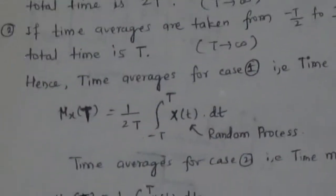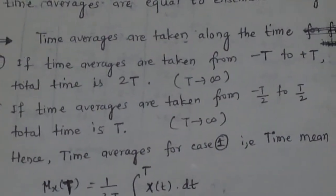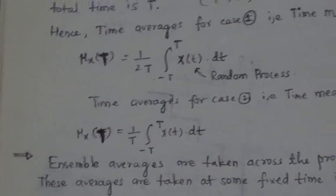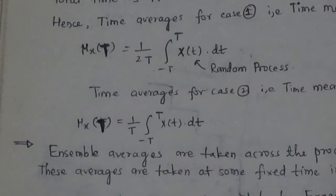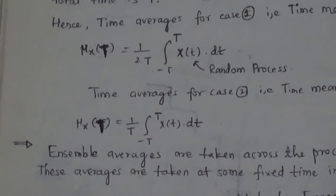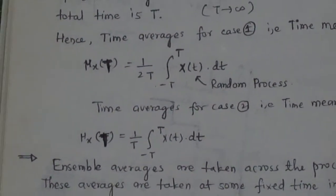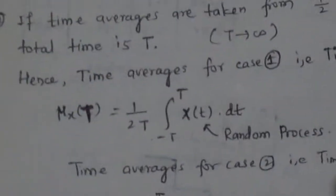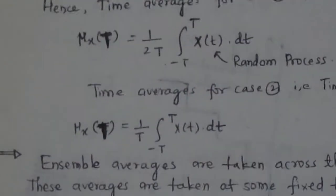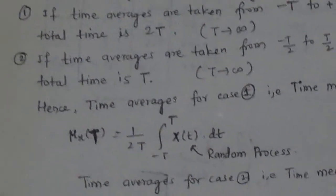where x(t) indicates here the random process. If you evaluate the results of both of these formulas, you will get the same result. Because in the first formula, 2T divided by 2T will be 1. Again, T divided by T will be 1 in the second case. In this way you can have the time averages.